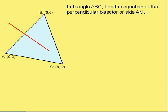In this video, I'm trying to find the equation of the perpendicular bisector of side AM in this triangle ABC. I've marked it in red here. What we know about perpendicular bisectors is, of course, they're perpendicular to the side, and they bisect it. So that gives us some information about several things.